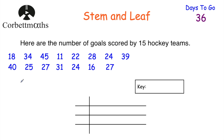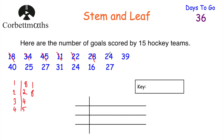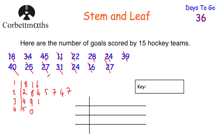In terms of drawing a stem and leaf diagram, I'm going to do an unordered one first. So we've got our tens, twenties, thirties, and forties. We place 18 — so an eight in the tens row; 34 — four in the thirties; 45 — five in the forties; 11 — one in the tens; 22 — two in the twenties; 28 — eight; 24 — four; 39 — nine; 40 — zero; 25 — five; 27 — seven; 31 — one; 24 — four; 16 — six; and 27 — seven. So that's our unordered stem and leaf diagram.